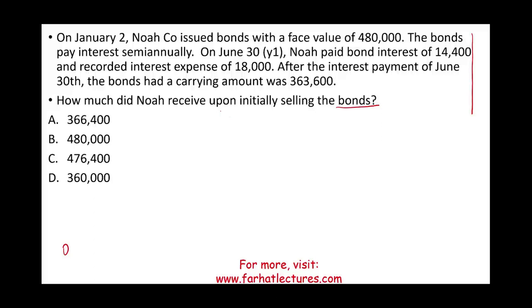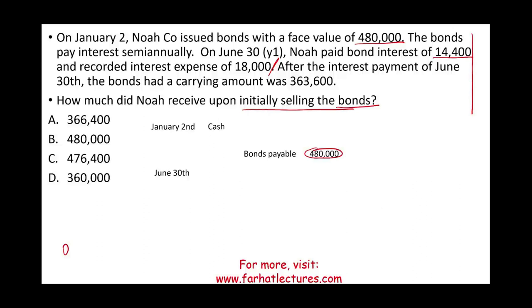The question is: how much did NOAA receive upon initially selling the bonds? On January 2nd, NOAA issued bonds with a face value of $480,000. The bond pays interest semi-annually. On June 30th, NOAA paid bond interest of $14,400 and recorded interest expense of $18,000. Let's stop right here — on January 2nd we issued a bond for $480,000, and six months later we made a cash payment of $14,400 while recording interest expense of $18,000.